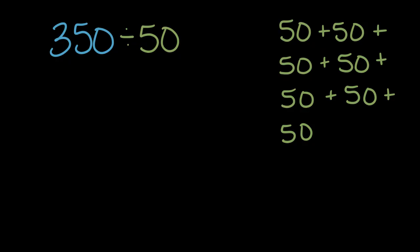So when we added all these 50s, these groups of 50, 50, 100, 150, 200, 250, 300, 350, we ended up with 350. So 350 can be divided into this many groups of 50, and how many groups is this? One, two, three, four, five, six, seven.